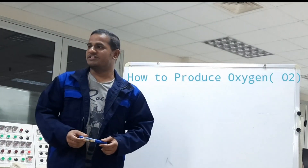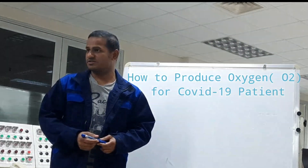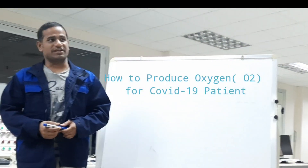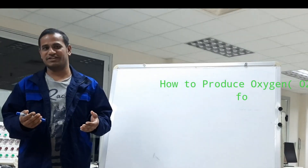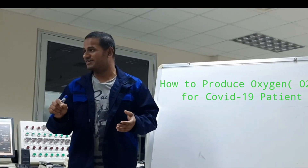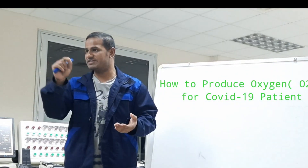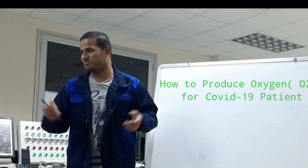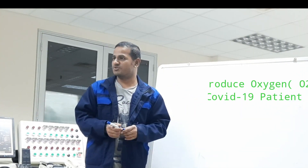Today we will discuss how to produce oxygen for COVID-19 infection. It is most important for all over the world. Allah has given oxygen fully free — we are getting oxygen from the environment fully free. The oxygen percentage in the air is 21%; if less than 19%, it is not sufficient for men. Today's process is how to produce oxygen from the atmospheric air.